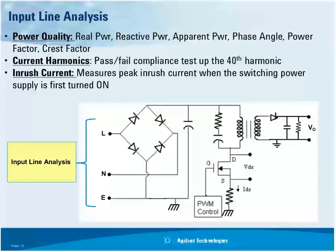Let's take a look at input line analysis — making measurements on your AC input. One measurement is power quality: the scope automatically measures real power, reactive power, apparent power, phase angle, power factor, and crest factor. Current harmonics is the only test among all these that I would term a compliance test — it must meet a particular standard. And then there's inrush current.